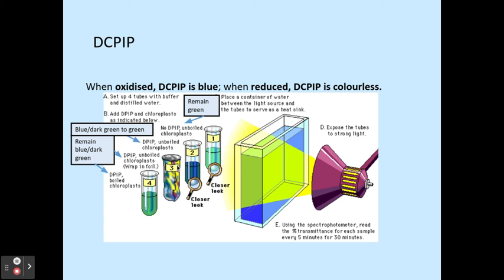In the third tube, it is covered up, so there is no light-dependent reaction occurring. Therefore, there is no reduction occurring because there is no chemiosmosis. In the fourth tube, because the chloroplasts have been boiled, the membranes are damaged. Again, there is no chemiosmosis occurring, so the DCPIP does not go colourless and it remains that dark bluey-green colour.